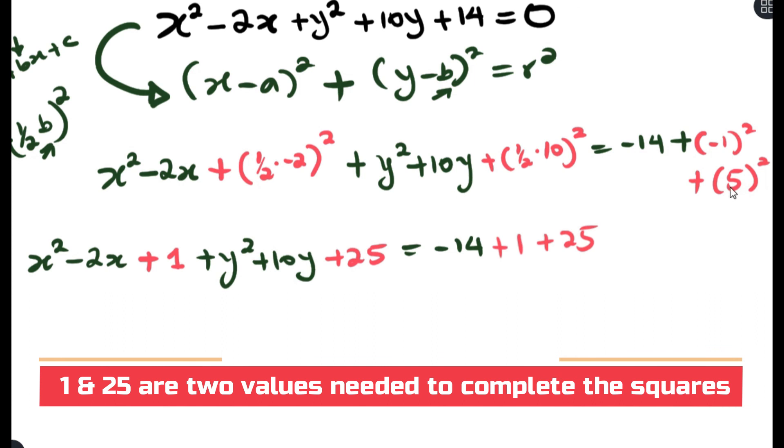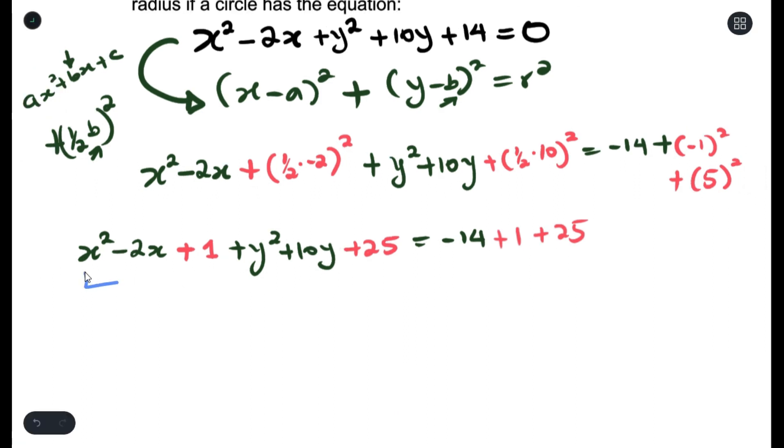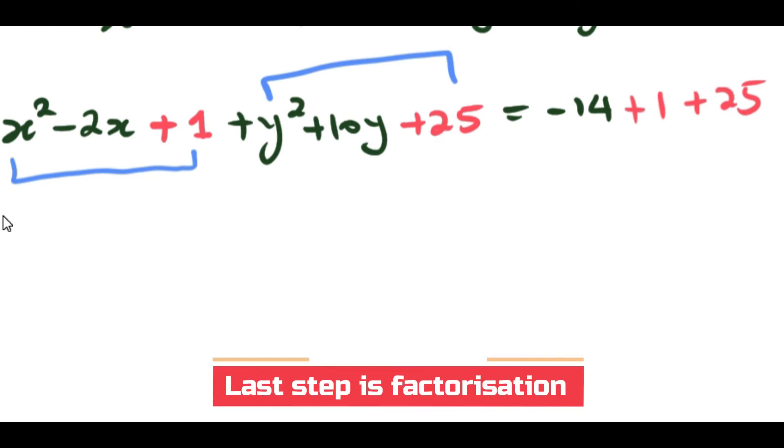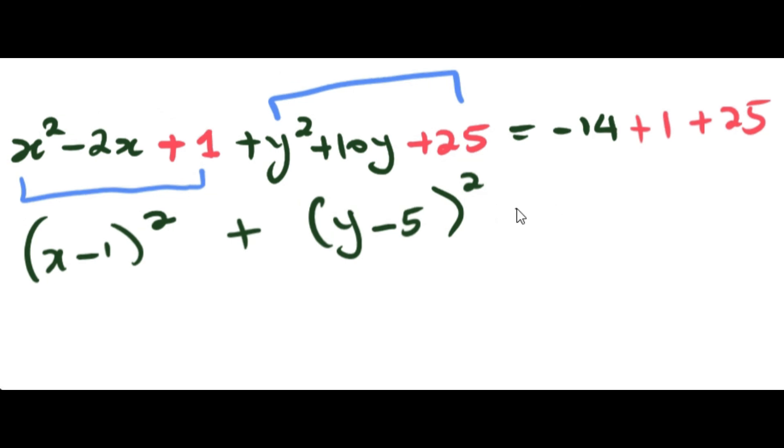And looking at this here, you can see that we added 1 and 25 on the left-hand side and we did the exact same thing on the right-hand side. So how it looks right now, for our x and our y, they are perfect squares. Now they are perfect squares because when you factorize them, they're literally going to give you perfect squares, which is exactly what we want. On the right-hand side, we just simplify.